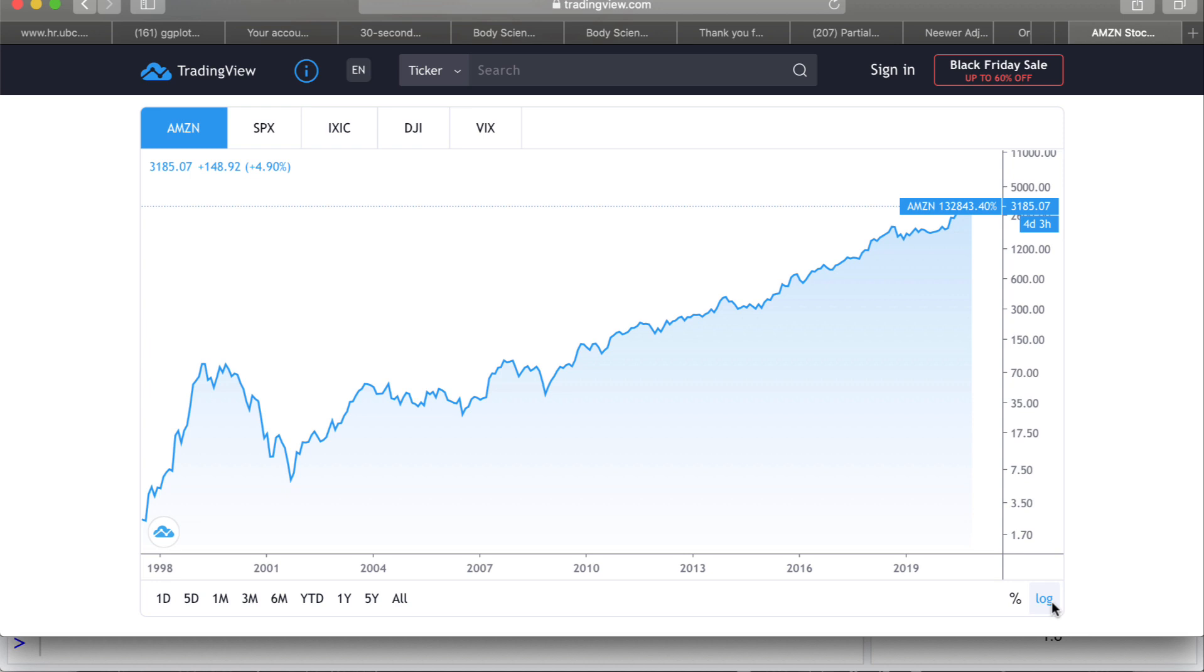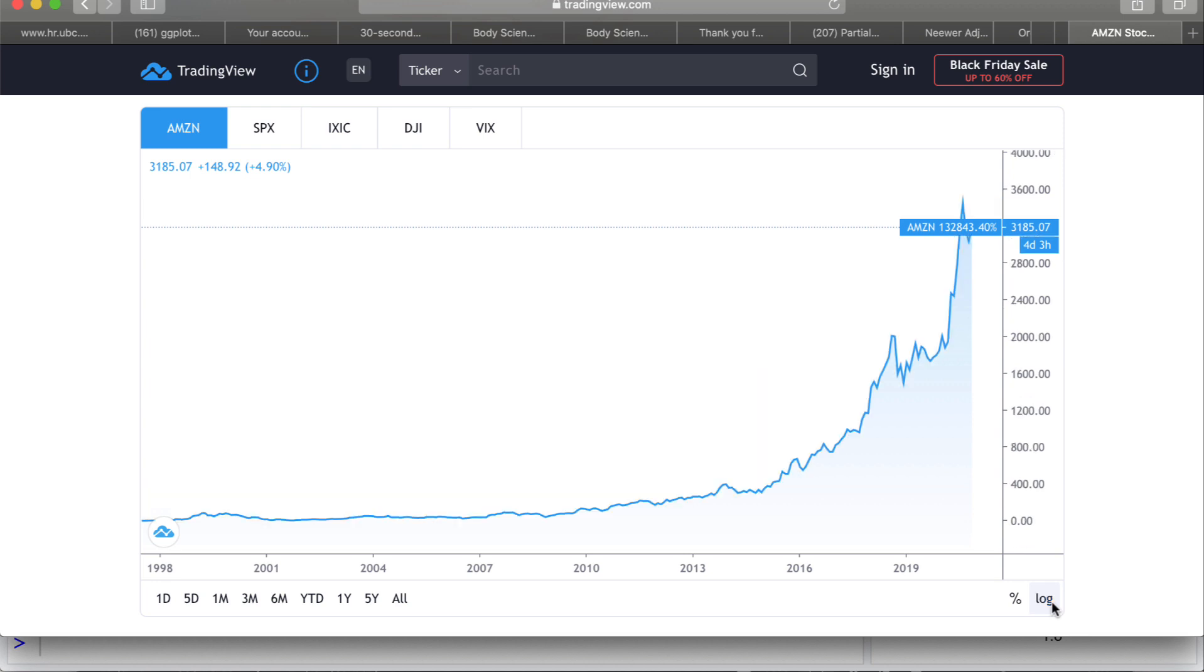But aside from that blip there, looks like from almost 2007 it's pretty much a constant growth, the same increase in the stock each year even though when we look at it on the linear scale it doesn't, and again this is because stocks grow multiplicatively.